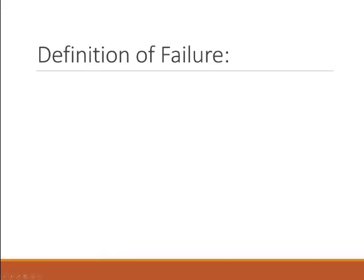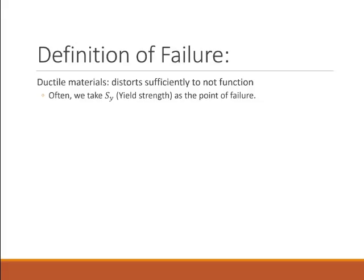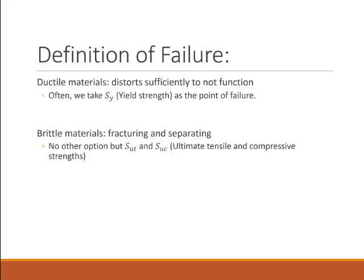So what is it that constitutes a failure? In ductile materials, failure means that the material has distorted so much it no longer functions. We often take the yield strength as the point of failure because that's when it begins to distort. In brittle materials, we don't have the ability for it to distort — it just fractures and separates, so we're forced to use either the ultimate tensile or the ultimate compressive strength as the point of failure.